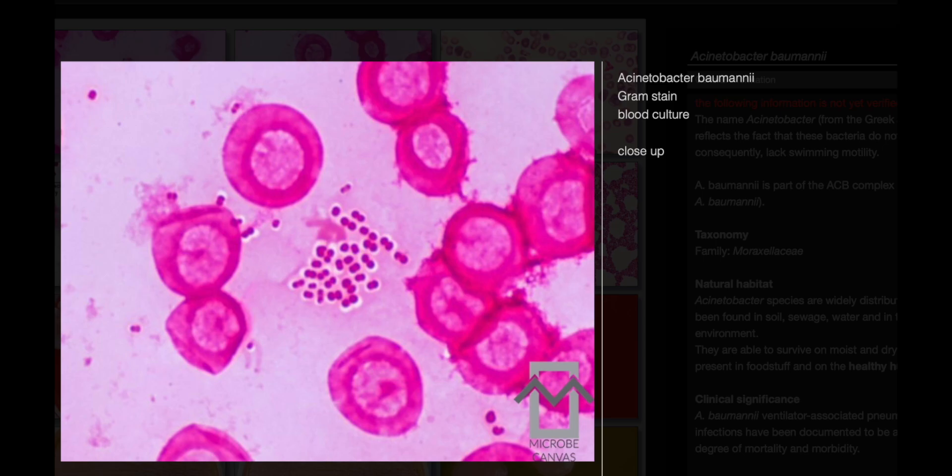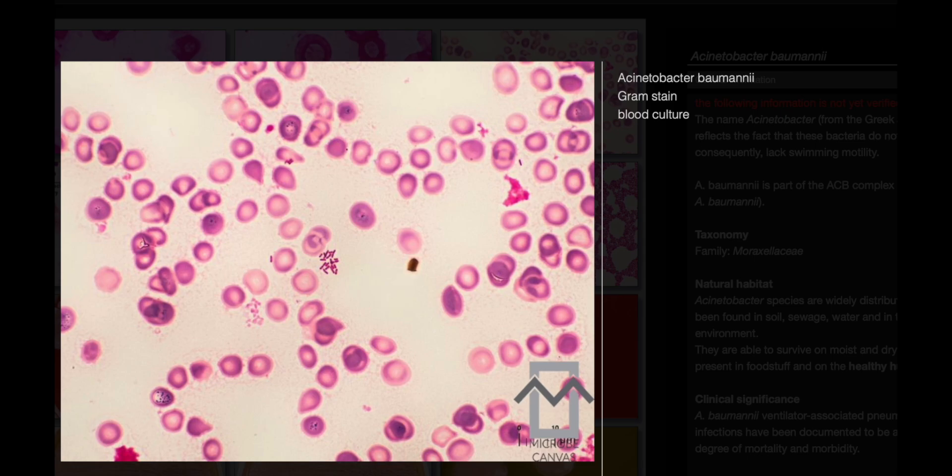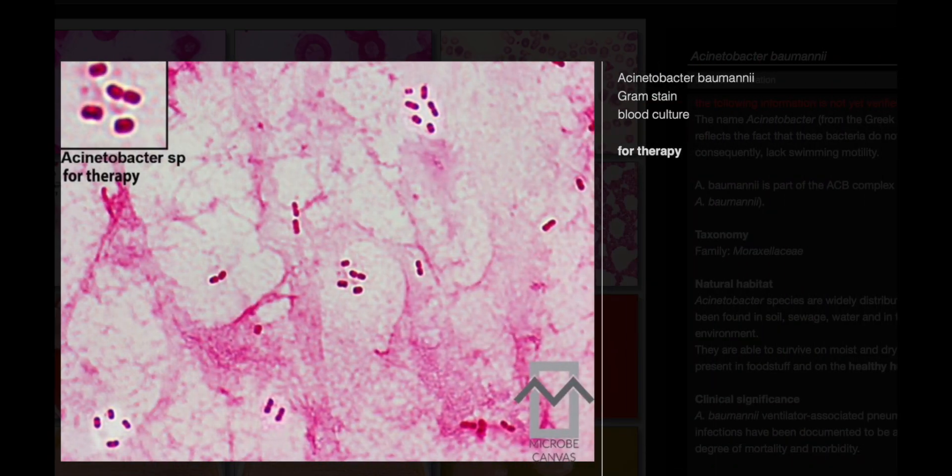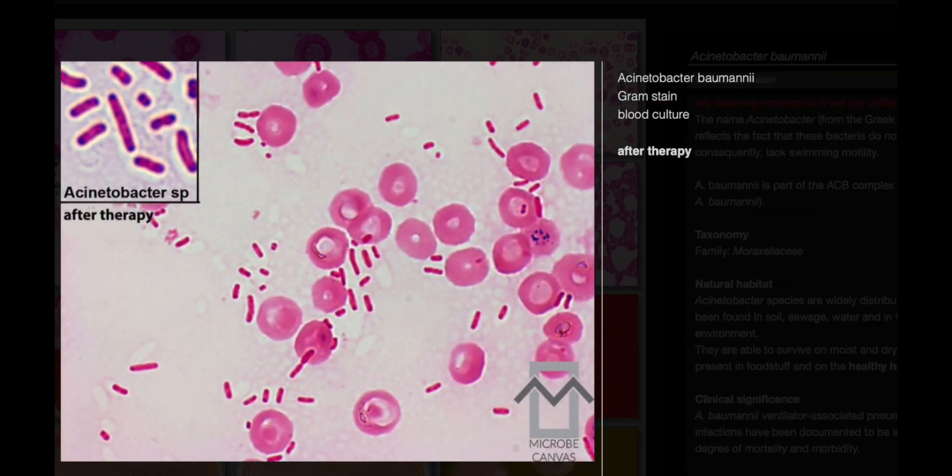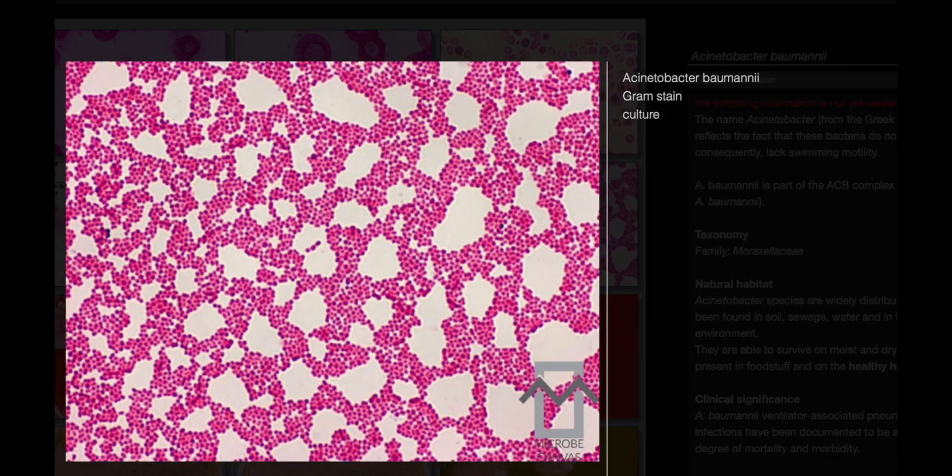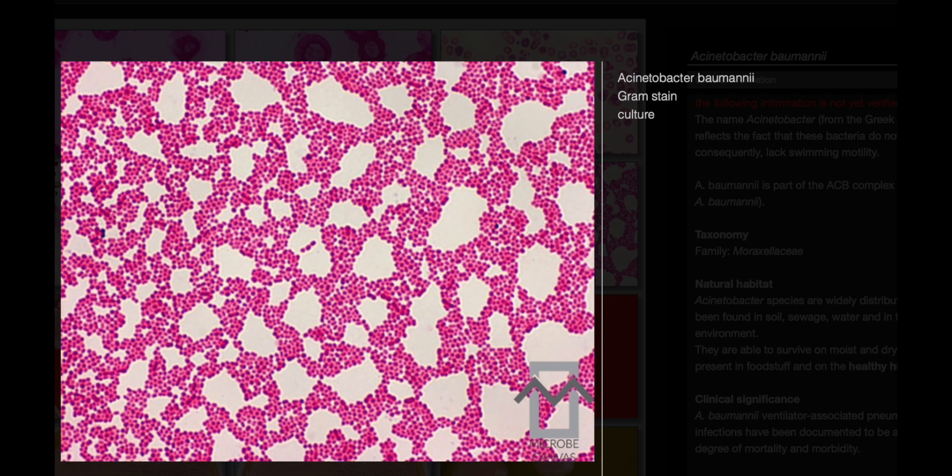Gram stain. Acinetobacter baumannii are gram-negative, exhibiting a short, almost round, rod-shaped morphology. Individual cells typically measure 0.9 to 1.5 microns in width and 1.5 to 2.5 microns in length. They are frequently observed in pairs or chains of varying length. Notably, these bacteria can sometimes pose a challenge during the gram staining process, as they may be difficult to decolorize.